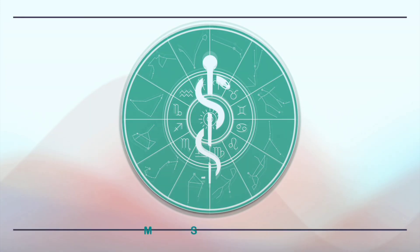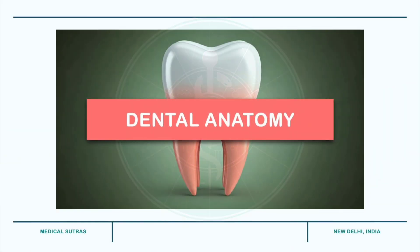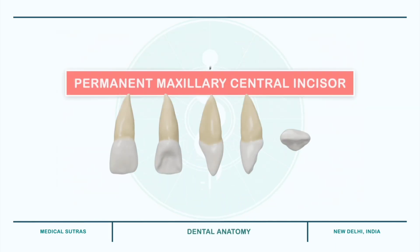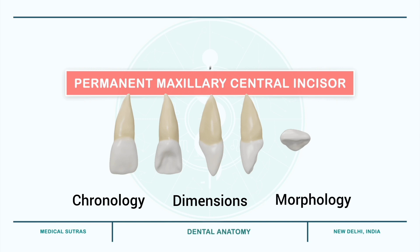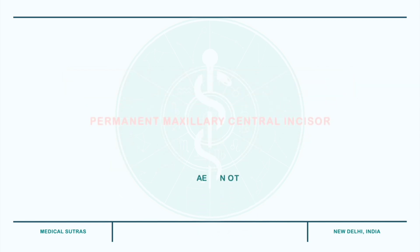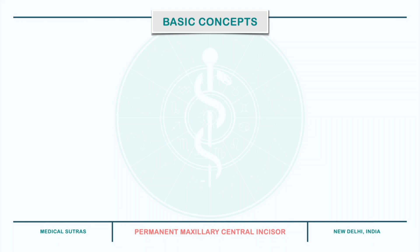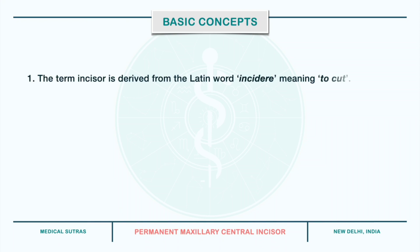Hello everyone, welcome to the series on Dental Anatomy. In today's video, we will discuss the permanent maxillary central incisor — its chronology, dimensions, and morphology. But before moving forward, let's recap some basic concepts. First, the term incisor is derived from the Latin word 'incidere', which means to cut. Hence the name itself reflects the function of the tooth, that is, cutting of food.